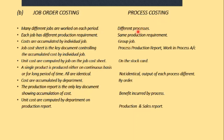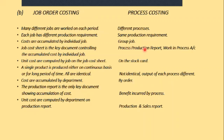Each job in job order costing has different production requirements, whereas process costing has the same production requirements every time — like making a soft drink that follows the same requirements each production run. Costs are accumulated by individual job in job costing, whereas in process costing costs are accumulated by a group of jobs or department. The job cost sheet is the key document controlling accumulated costs by individual job, while in process costing we have the production report and the work-in-process account. Unit costs are computed by job on the job cost sheet.